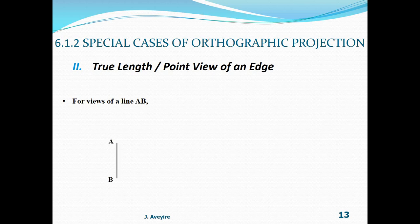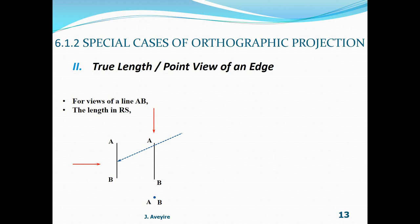Consider the views of a vertical line AB. With a projector from the left side, this gives us a vertical line. A projector from above gives us a point. Reading these three views correctly: the length in the front view and the length in the right side view are true lengths.